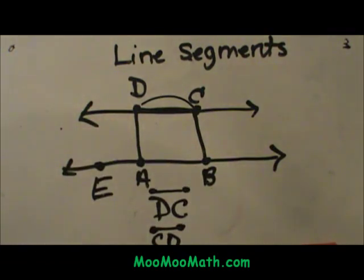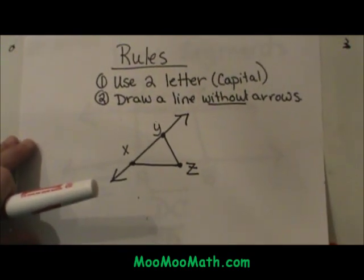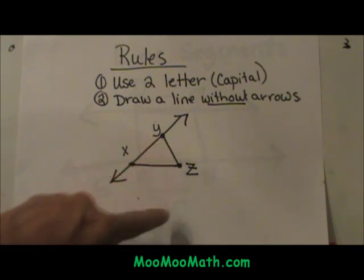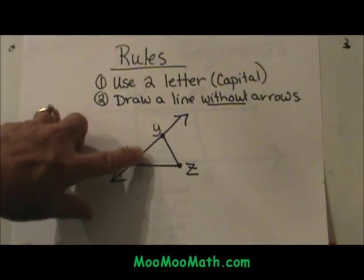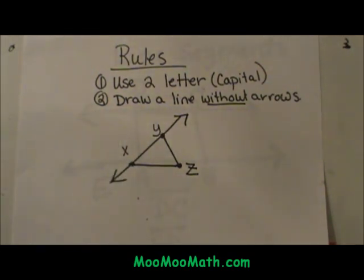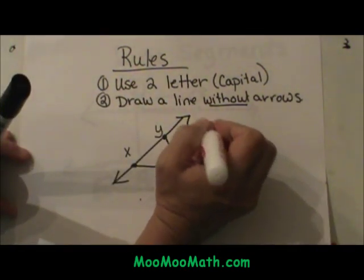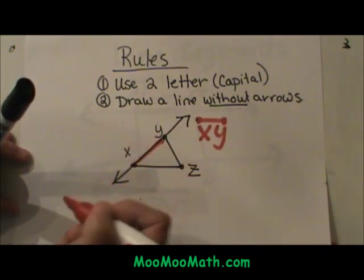So I'm going to give you a quick overview of the rules for naming a line segment. The first rule is you need to use two letters, and the letters are always capital letters because those are points that you're referring to. Then you're going to draw a line over it without arrows. Here's another example: if I want to name the segment from X to Y, even though it's part of a line, and I just want to designate that as a line segment, I can name it XY with two dots on the end to show I'm just referring to this section of the picture.